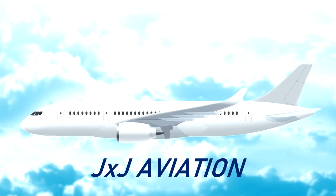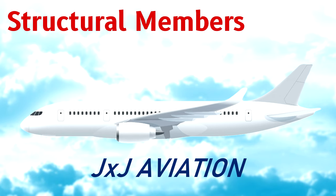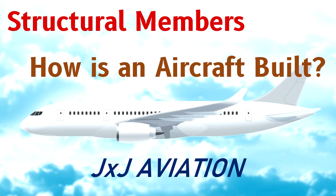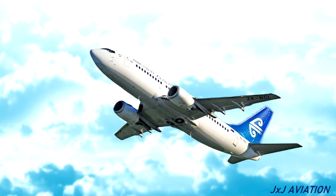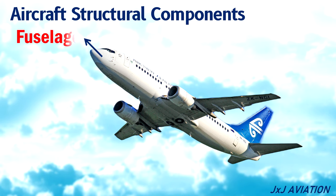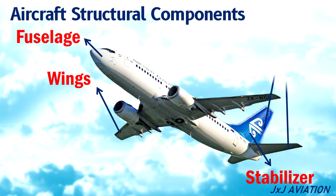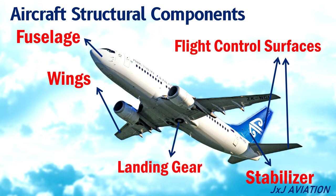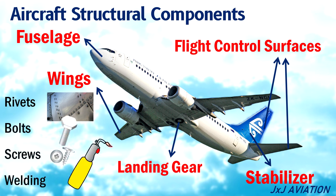Hello and welcome to GXJ Aviation. In this video, we will be looking at the different structural members of an aircraft, their functions, and how an aircraft is built. A fixed wing aircraft consists of different components such as the fuselage, wings, stabilizers, flight control surfaces, and landing gear. These components, which are part of the airframe, are assembled together using rivets, bolts, screws, or different welding techniques. We will look at the different structural members used in these airframe components to understand how an aircraft is built.